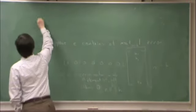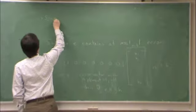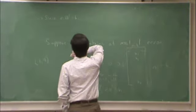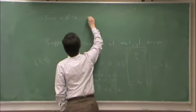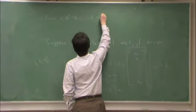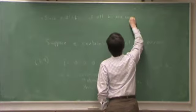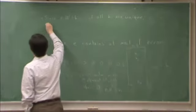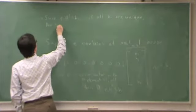So since e_i transpose equals h_i, if all h_i are unique, the syndrome will pick off where that error is.